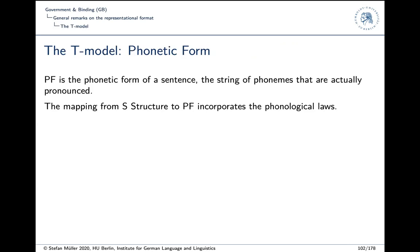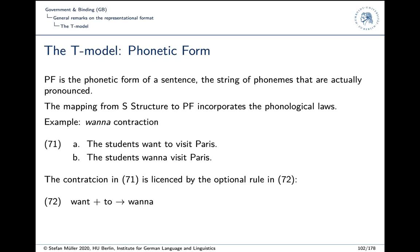The S-structure derived via Move Alpha is surface-like but not necessarily the form in which actual sentences appear — that is handled at phonetic form (PF). One often-cited example is the 'wanna' construction: 'The students want to visit Paris.' In the syntax tree, 'want' and 'to' are separate, but because they are adjacent they can fuse phonologically. The optional rule is: WANT + TO → WANNA. This fusion happens on PF.